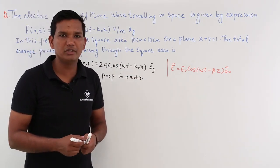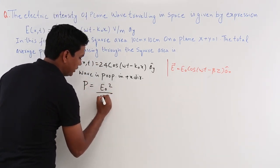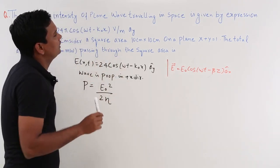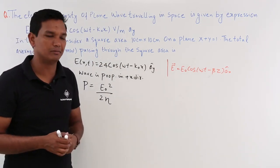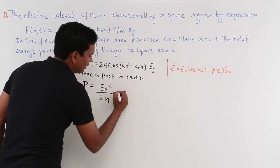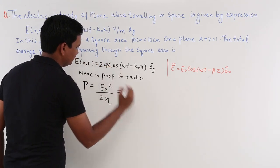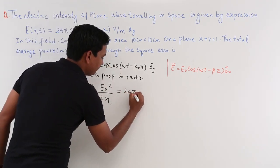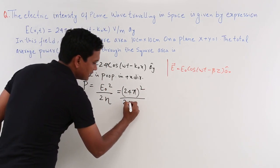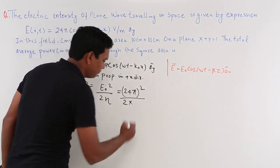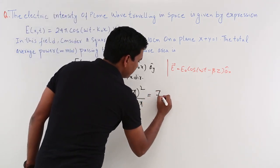Now, how do we find the power? The time-average power density is P = E₀²/(2η). We are considering a lossless medium — alpha is not mentioned. E₀ is given as 24π, so we compute (24π)² / 2 divided by η. For free space, η = 120π (or 377 Ω). Solving this gives 7.53 W/m².